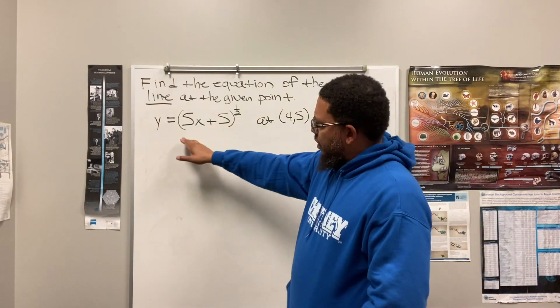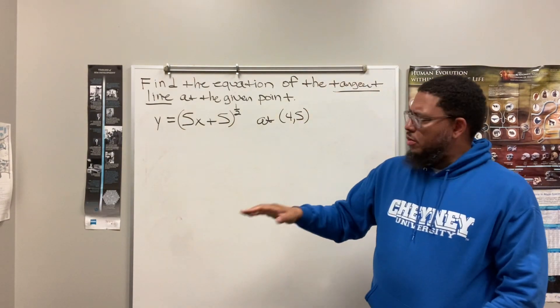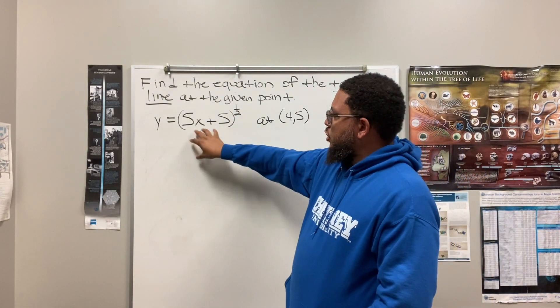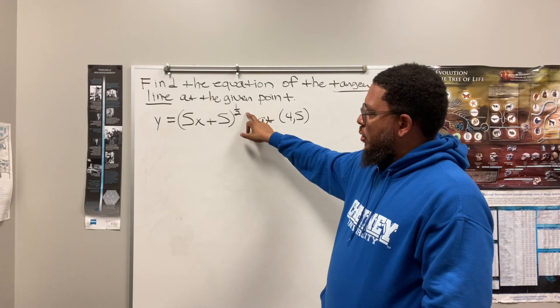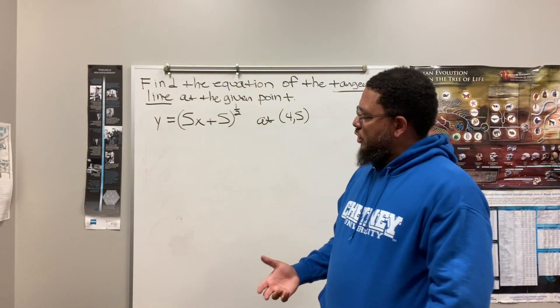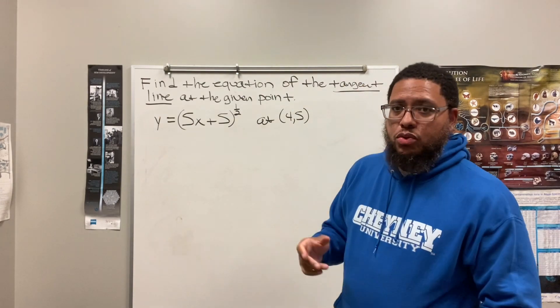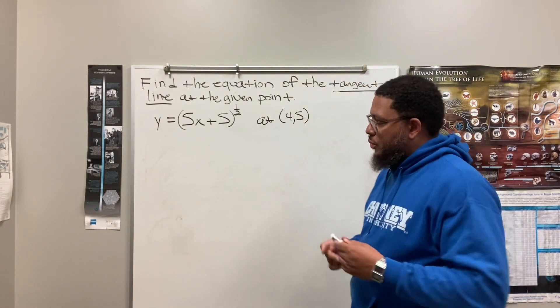All right, so we look at this first. When we got to first size it up and figure out, how do I find the derivative of this? I noticed that this is an expression, 5x plus 5, and it's to the 1 half power. So this is kind of like a composite function. So when we see something that looks like this, we think chain rule. Chain rule is what we use.